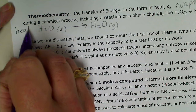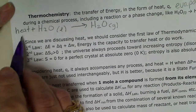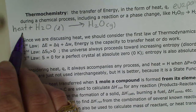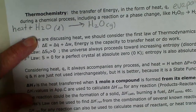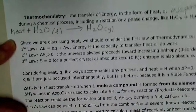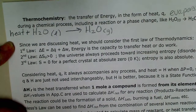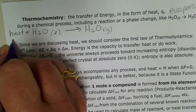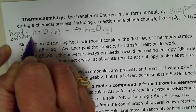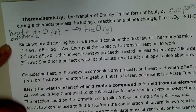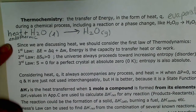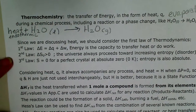Heat can either be added by heating up a pot full of water, or if this evaporation process happens on our skin spontaneously, it's going to absorb heat from our skin so we'll feel cooler. This is an endothermic reaction — if we have to add heat or if that reaction absorbs heat. We're going to talk more specifically about endothermic versus exothermic.